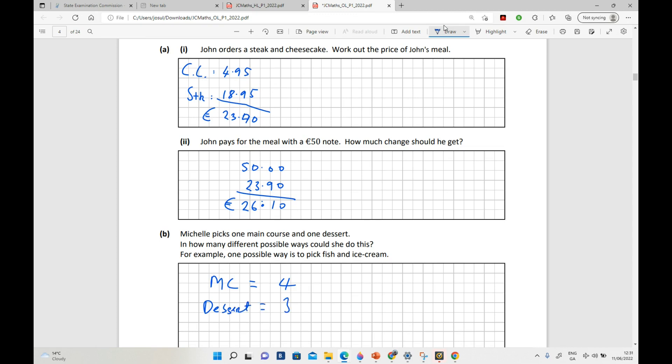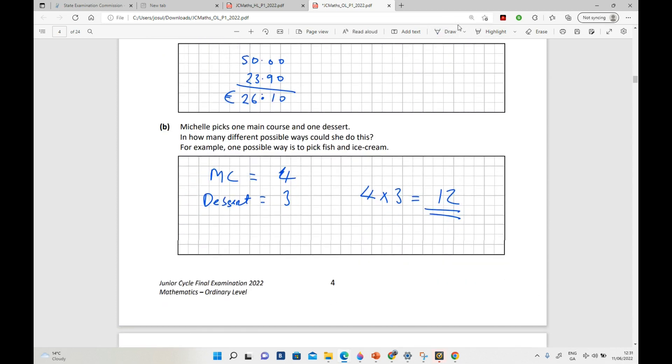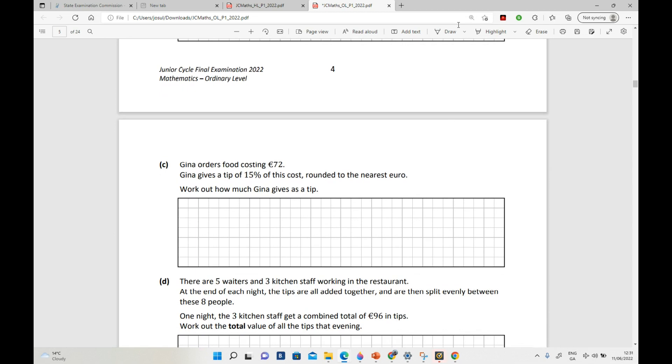So this is the fundamental counting rule. So the total number of options here is four multiplied by three, which is 12. So that's the total different number of ways that Michelle could have a main course and a dessert. Okay, so that's your answer: 12. Now Gina orders food costing 72 euro.